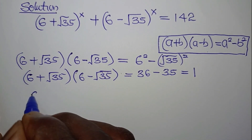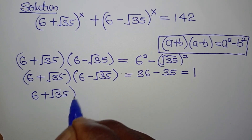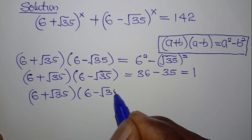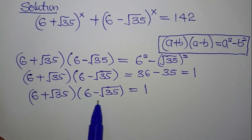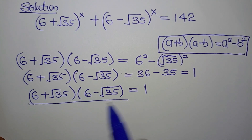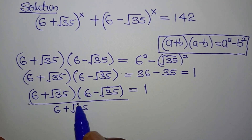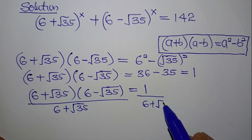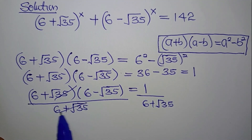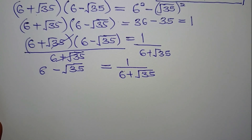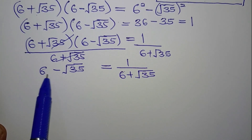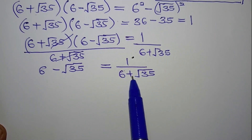So we have (6 + √35)(6 - √35) = 1. If we divide both sides by (6 + √35), this cancels on the left, giving us: (6 - √35) = 1 / (6 + √35). This is an important relationship we will use.